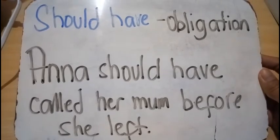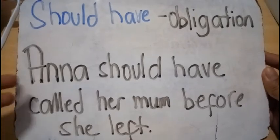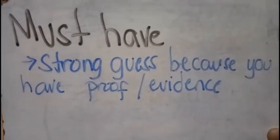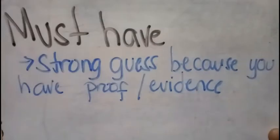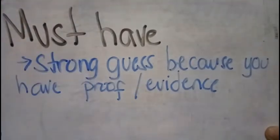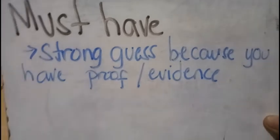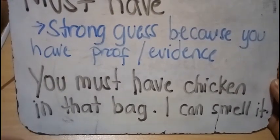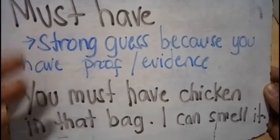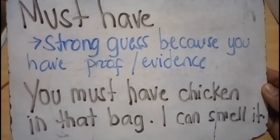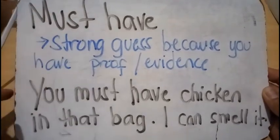Another example: 'She should have taken extra care when she rode the horse.' Should have shows obligation or something that needs to be done. Next, we talk about must have. We use must have in a sentence — also referring to the past — to show a strong guess because we have proof or evidence of something. Example: 'You must have chicken in that bag — I can smell it.' Your strong guess is based on evidence, so we use must have.